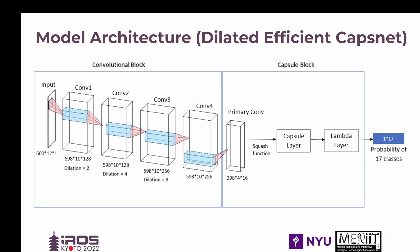The convolutional block has four convolutional layers. The capsule block has a primary convolution followed by a squash function, where V sub J is the vector output of capsule J, and S sub J is the total input. A capsule layer performs routing by agreement, where the predictions of the low-level capsules are routed to their best-matched parent. This helps assess the reciprocal agreement between groups of neurons to capture covariance, leading to a compact model with fewer parameters and better capability to generalize on new data. A lambda function generates the outputs — the probability of each signal classified as one of the 17 gestures.